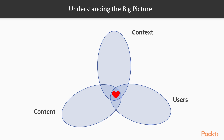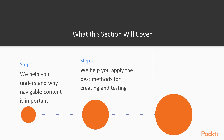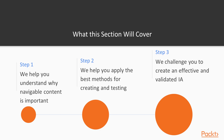We have the perfect website that balances all three things. If you just have a website that's purely content, it's not going to serve your business needs or your users. And if you just focus on your own business, no one's going to buy from you or find it useful. So in this section we're going to understand why navigable content is important, help you apply the best methods for creating and testing information architectures, and challenge you to create an effective and validated information architecture.